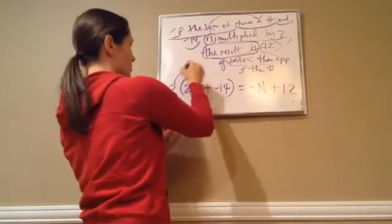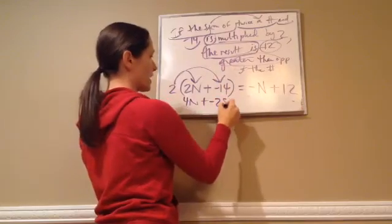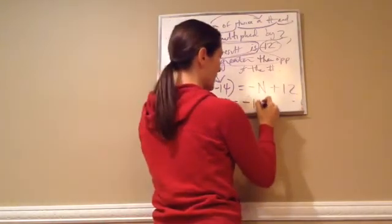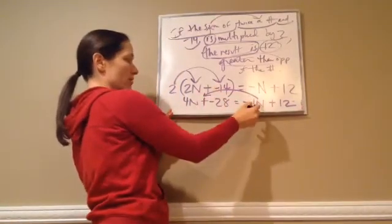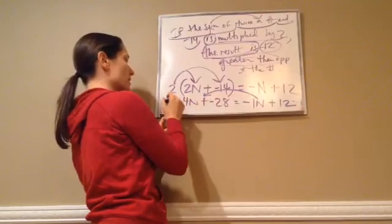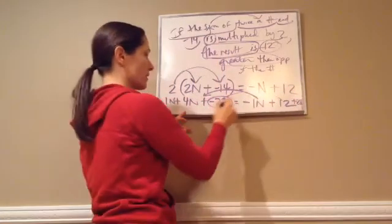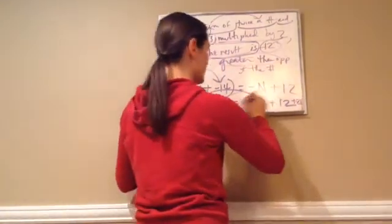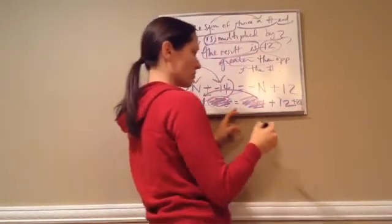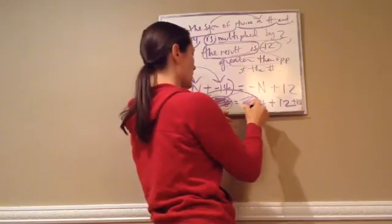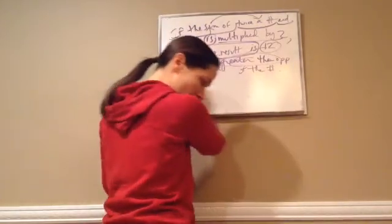Got it? Did you? So we would do this, get our answer, 4N, plus, do this, get negative 28, equals negative 1N plus 12. Okay. Then we would move. Very good. We would make this negative 1N to a positive 1N, and then this negative 28 to a plus positive 28, and that gets rid of that, and that gets rid of that, and then we have 1N plus 4N, which equals 5N, and then 12 plus 40, 28 is 40, and then N would be 8. Okay. That was just a quick little version of that.